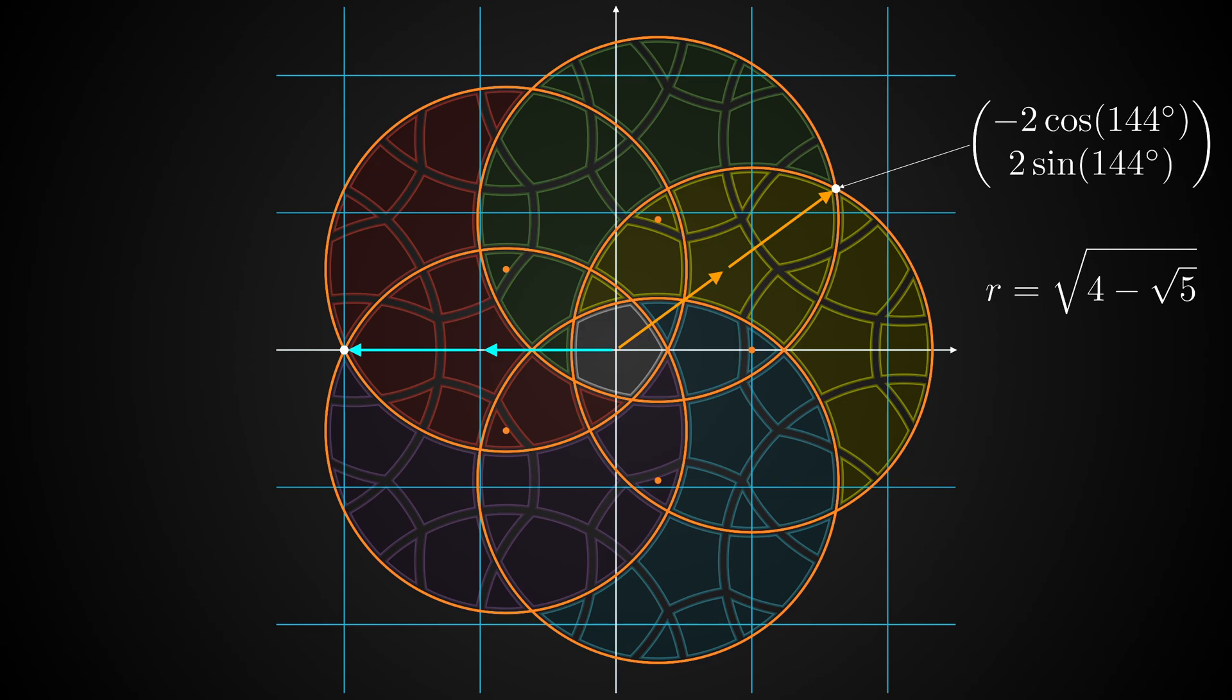But wait, there's more to discover here. Check out this line. The midpoint exactly aligns with this other intersection of two circles. This is also because of the special value of r. Hence you reach it by adding one blue and one orange arrow.